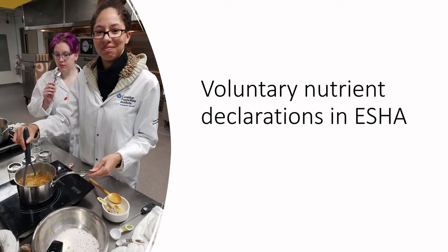We've been digging into nutrition facts tables and we've gotten a sense that there are some nutrients that are consistently declared, but there are more vitamins and minerals out there and other nutrients. There are perhaps macronutrients like omega-3 fatty acids that may be interesting in your product and they're not naturally showing up in Esha. So how do we go about changing the default settings in Esha so that we can see those nutrients?